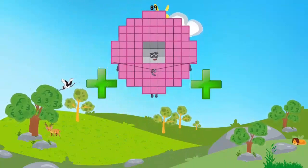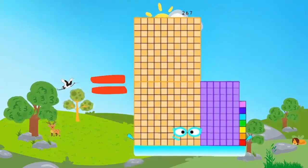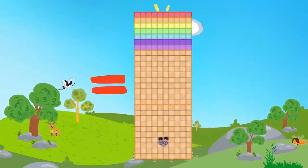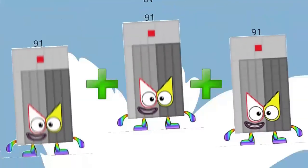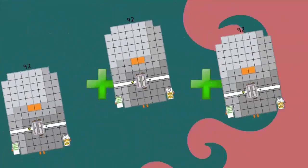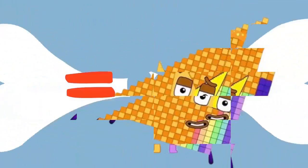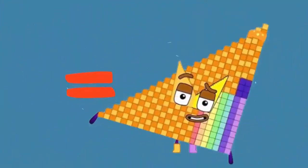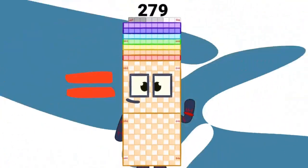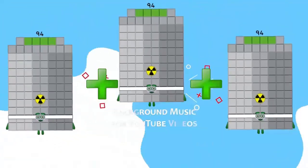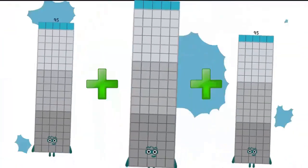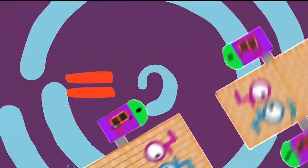89 plus 89 plus 89 equals 167. 91 plus 91 plus 91 equals 172. 92 plus 92 plus 92 equals 176. 93 plus 93 plus 93 equals 179. 94 plus 94 plus 94 equals 182. 95 plus 95 plus 95 equals 185.